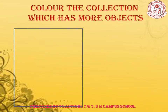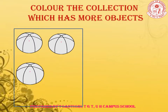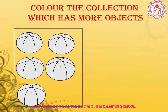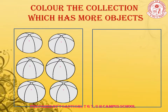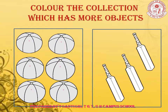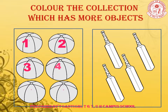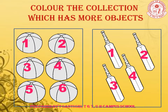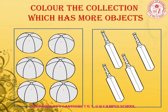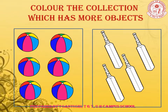Here we have given two more groups. In one group we have balls and in another group we have bats. Let us start counting the objects in the first group: 1, 2, 3, 4, 5, 6. Here we have 6 balls. And let us count the objects in the second group: 1, 2, 3, 4. We have 4 bats. In the first group we have 6 balls and in the second group 4 bats. So which is more? Yes, in the first group we have more objects. So, color the balls in the first group.